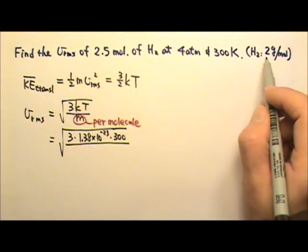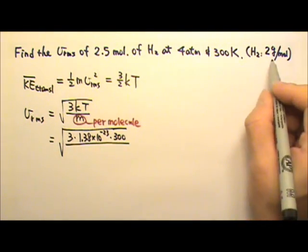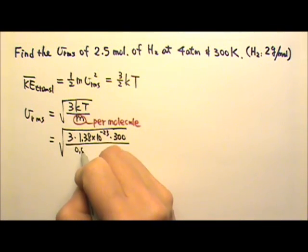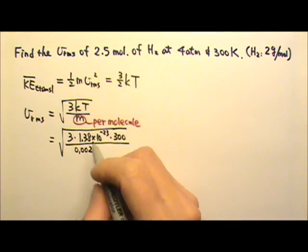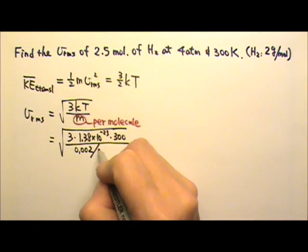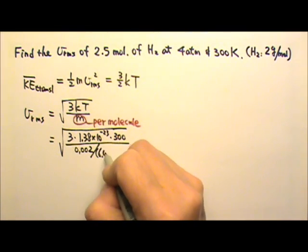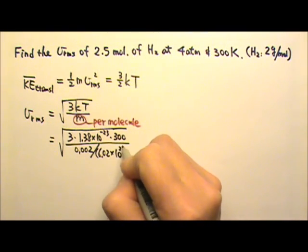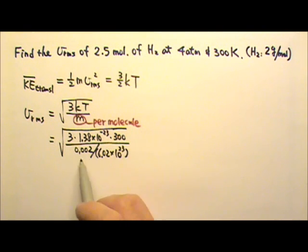And that's 2 grams per mole and we have to change it to the standard unit .002 kilograms and then divide this by the Avogadro's number 6.02 times 10 to the 23rd. Now this will be the mass of one single molecule.